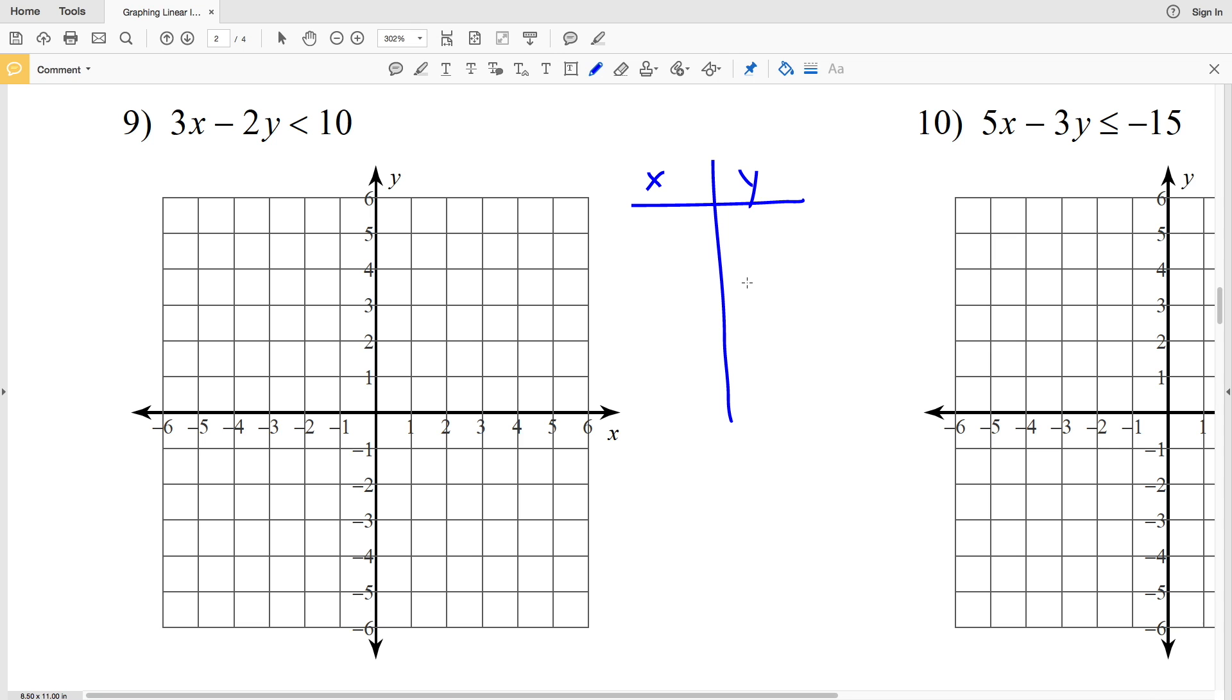For this I'm picking a value for X and solving for Y. I want to see when X is 0, what is Y. I'm going to write this like an equation: 3x minus 2y equals 10. If X is 0, 3 times 0 is simply 0, so I'll be left with negative 2y equals 10. Divide by negative 2 to get Y equals negative 5. So when X is 0, Y equals negative 5.